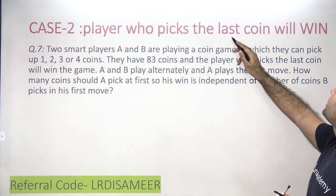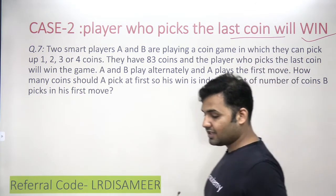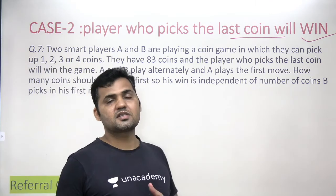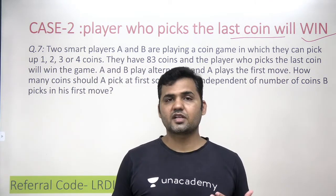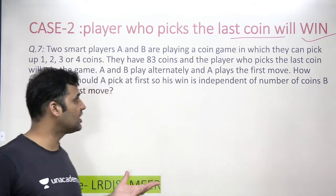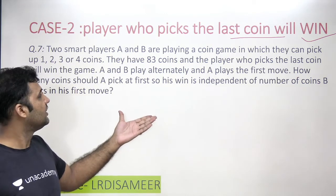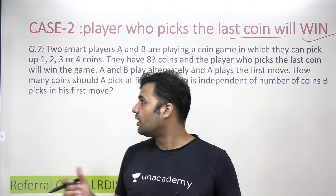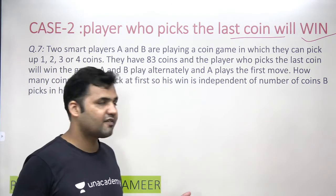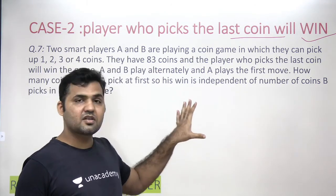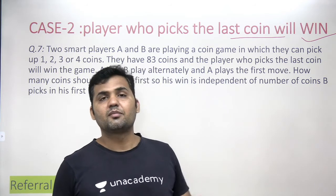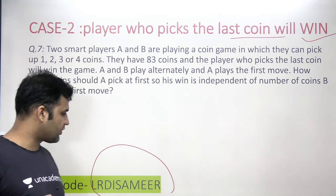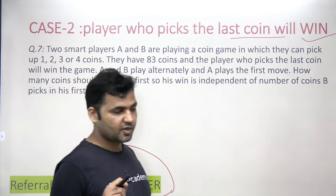The second case - where the player picking the last coin wins - will be discussed in the next video. Try to derive the controlling factor for that case by yourself; if you can, it means you've understood the complete concept and don't need to memorize the formula. Thank you for watching. Please share the channel with your friends, subscribe, and click the notification button. Use referral code LRDA SMEER for 10% off on Academic Plus.